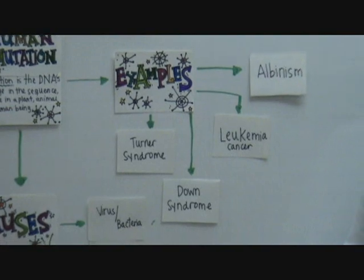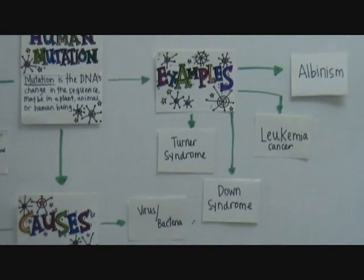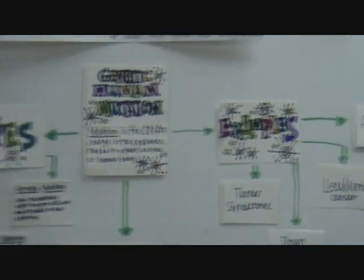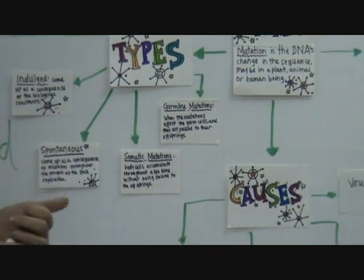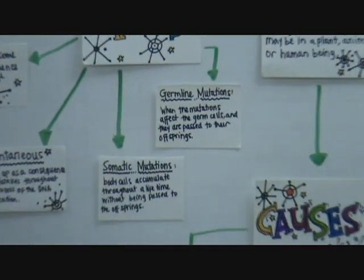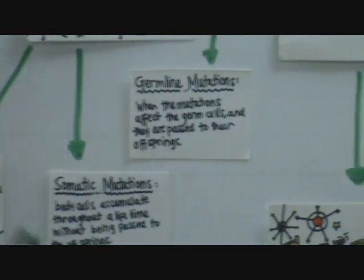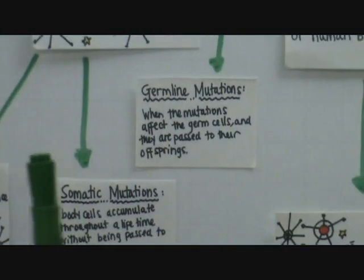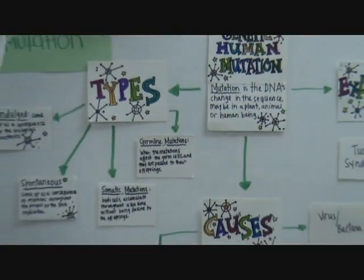There's the other one that is the germ-line mutations, which obviously affect the germ cells, and these are passed through the other generations. The term is germ-line.